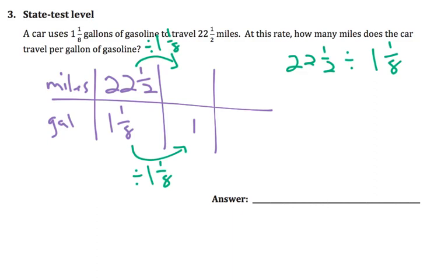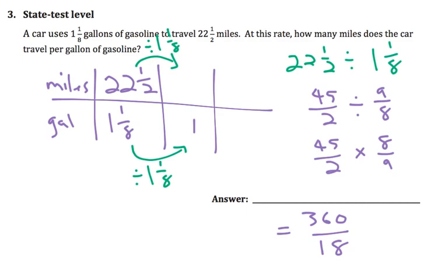So we have 22 and a half divided by 1 and 1 eighth. And assuming we don't have a calculator, let's write these as improper fractions. So 22 times 2 is 44, plus one more would be 45 halves. And then 1 and 1 eighth, well, that's like 8 eighths and one more, so 9 eighths. This is going to get kind of big. So 45 halves multiplied by the inverse, which is 8 ninths. And since we're not currently taking a state test, let's use a calculator. 45 times 8 is 360, and 2 times 9 is 18. And then 360 divided by 18 equals 20.